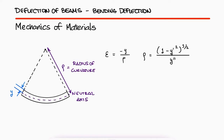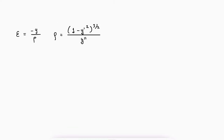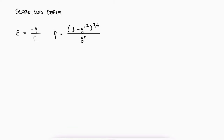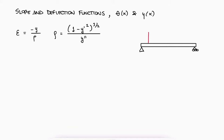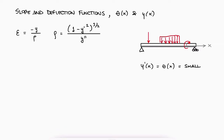A link to a one-and-a-half minute proof for this expression is in the description below if you're interested. For any beam being deformed by point loads, distributed loads, couples, or any combination of external or reaction loads, y-prime, which is the derivative of y and therefore the slope of the beam, is very very small. If we take a very small value and square it, it will be even smaller, practically zero.